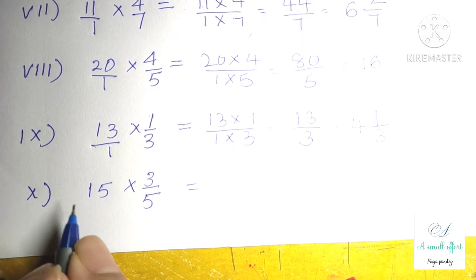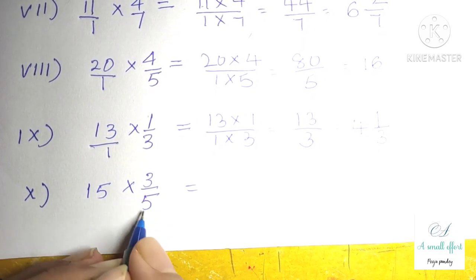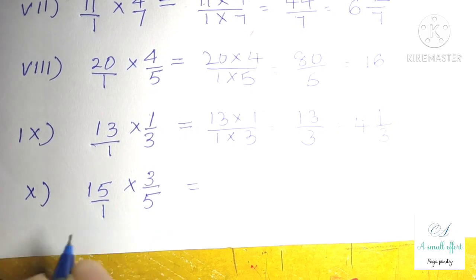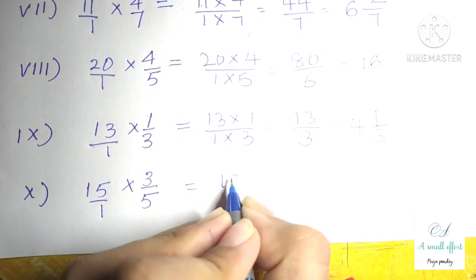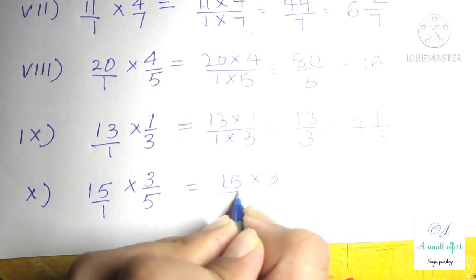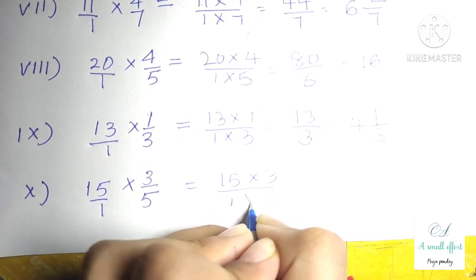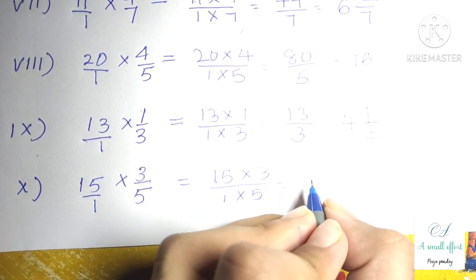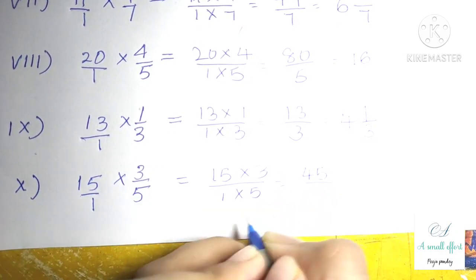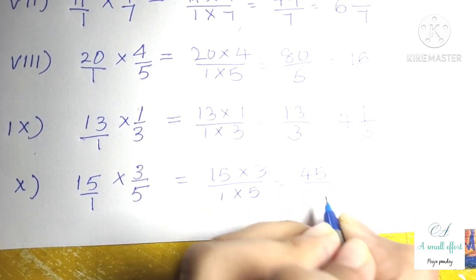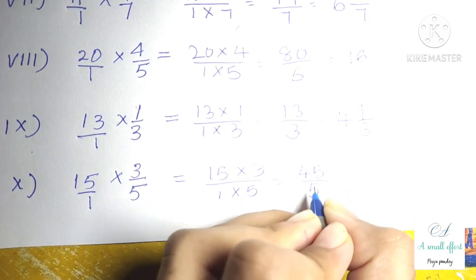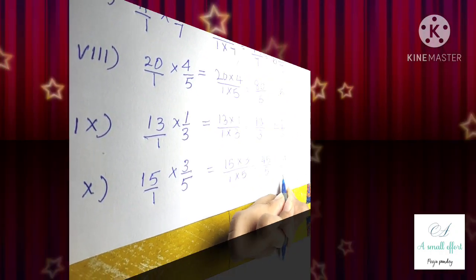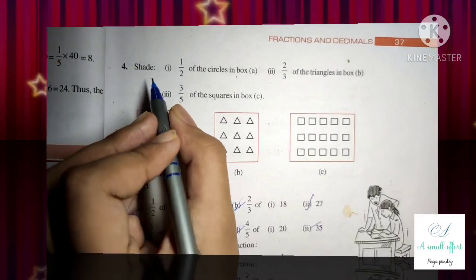Question number 3 part 10 is 15 into 3 by 5. We can write 15 as 15 by 1, multiply numerator with numerator and denominator with denominator: 15 into 3 is 45 by 5. In the 5 times table, 45 comes 9 times, so our answer is 9.